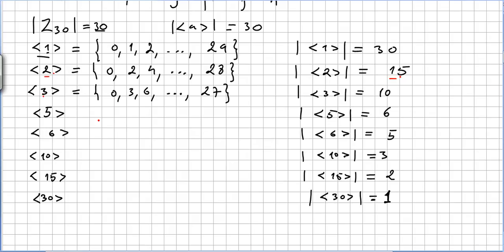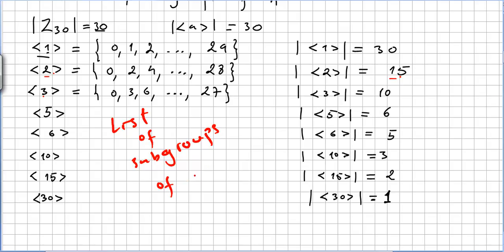Order 3. So all this will be the list of subgroups of C_30. It will be generated by 1, 2, by 3, by 5, by 6, by 10, by 15, by 30. And here you have all the orders.